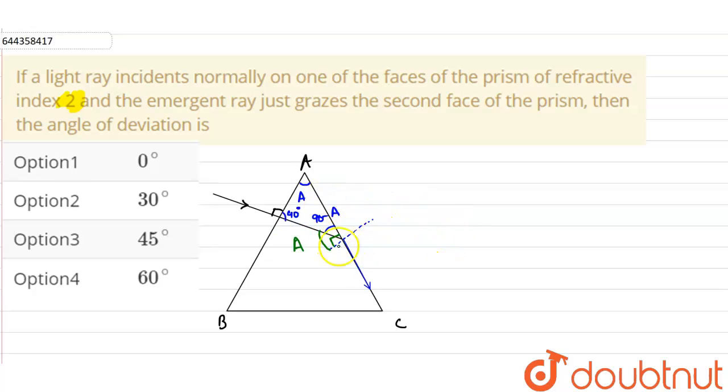Now since it is not emerging from the second surface AC, it is just touching the second surface, therefore this angle will be equals to the critical angle C. So we have found the relation that angle of prism is equal to the critical angle.